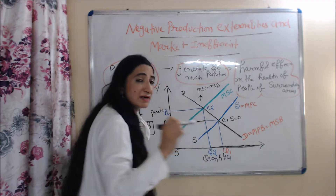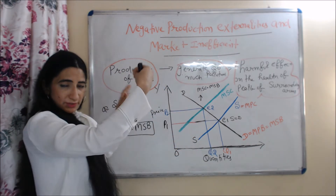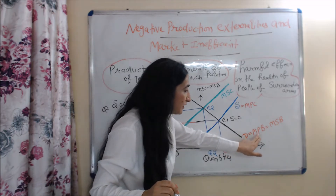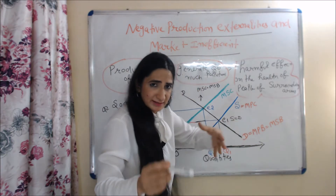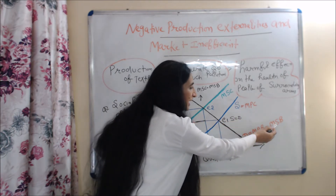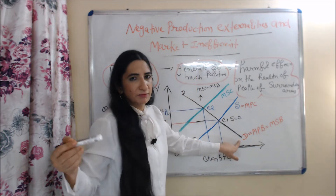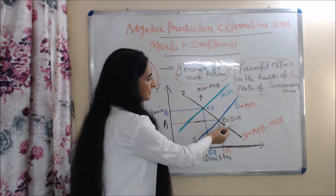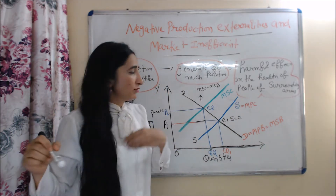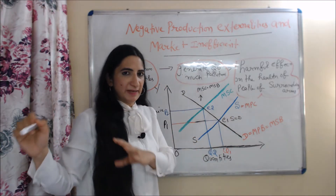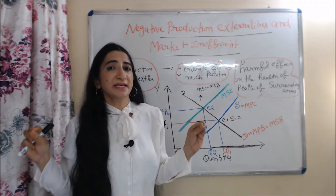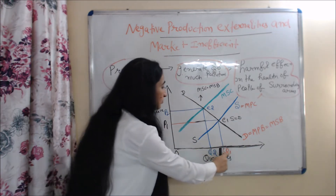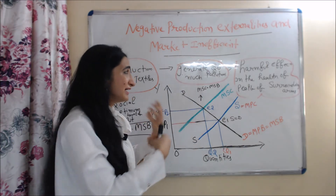Now we will see how these negative externalities can cause market failure with the help of this diagram. On the x-axis we have quantities, on the y-axis we have price. This DD is the demand curve of the firm — taking the textile firm as our example. The demand curve of the firm is equal to MPB and MSB. This SS is the supply curve of the firm, equal to marginal private cost. Initially, our equilibrium point is E1, where demand and supply of the firm are equal — marginal private cost equals marginal private benefit. This E1 is the market equilibrium point, but at this point the market is not performing efficiently.